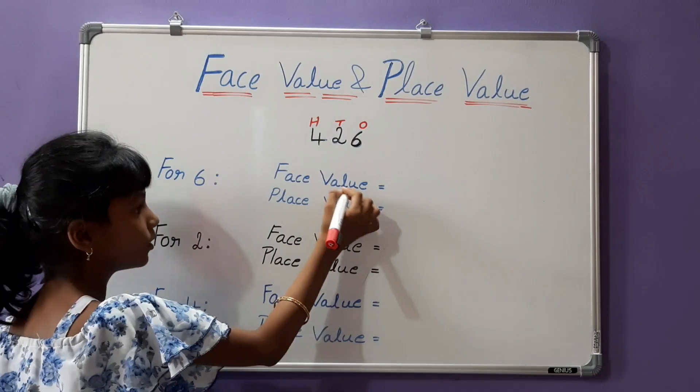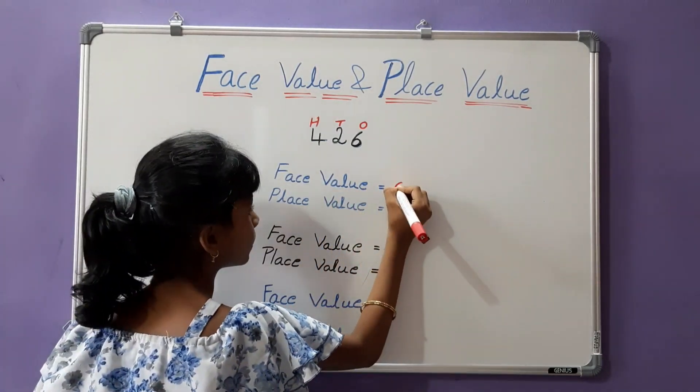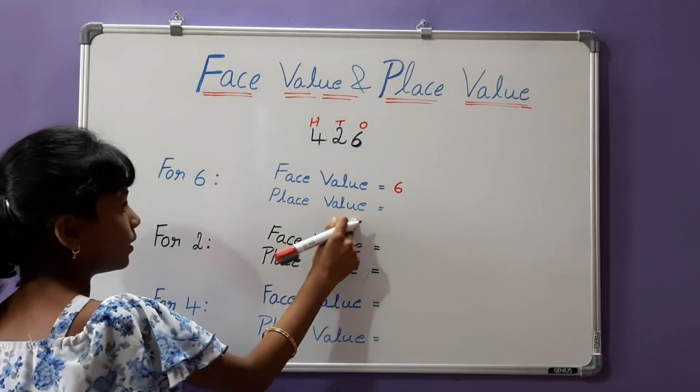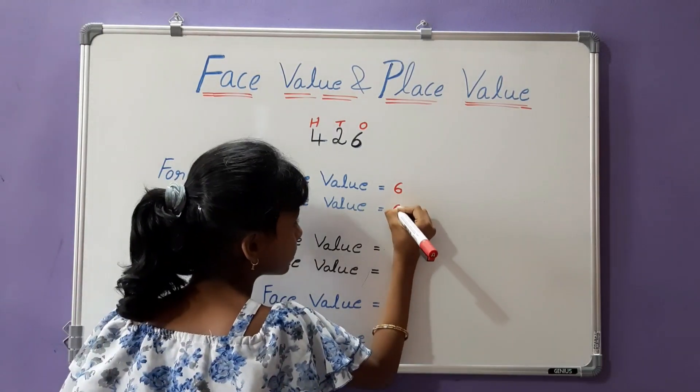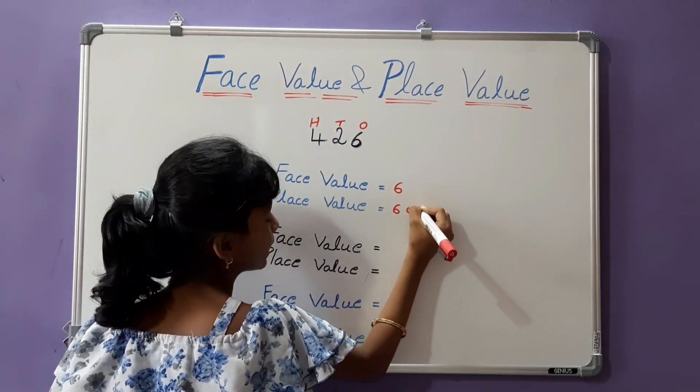For 6, face value is 6. Place value is 6 ones is equal to 6.